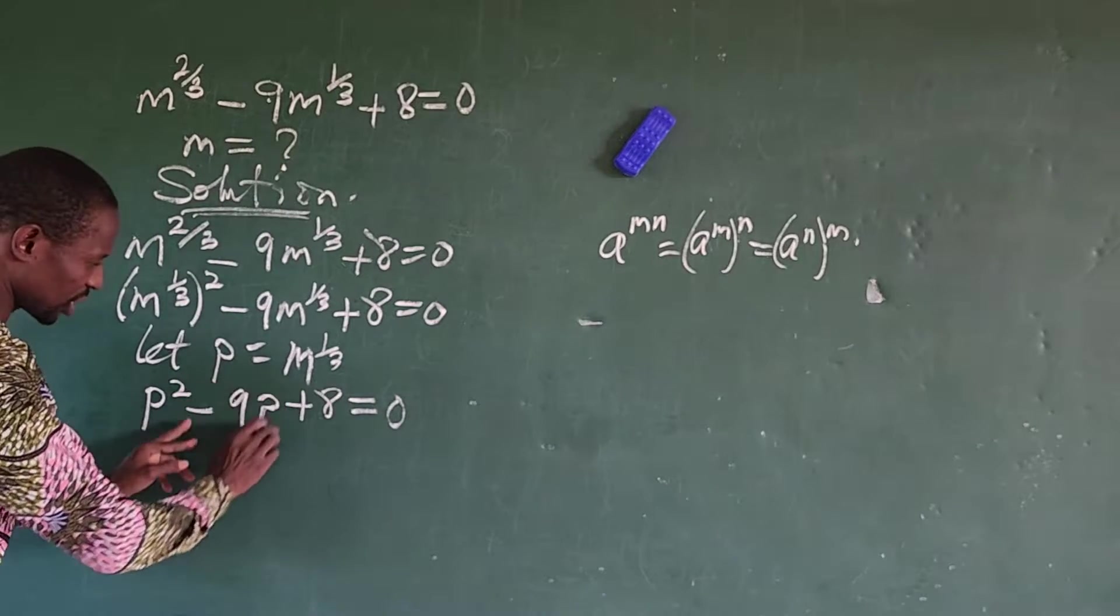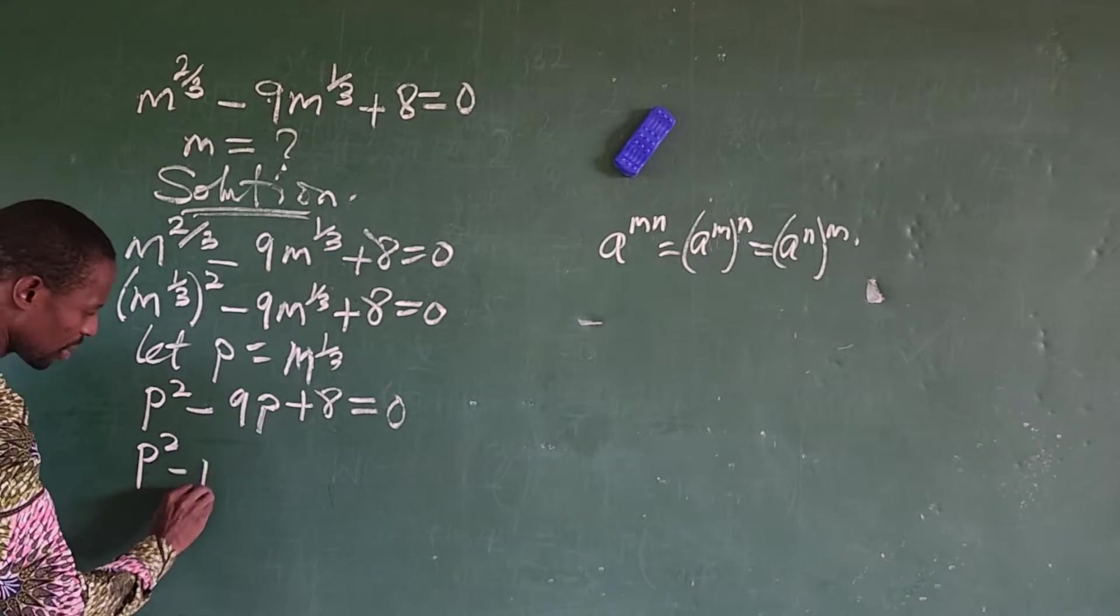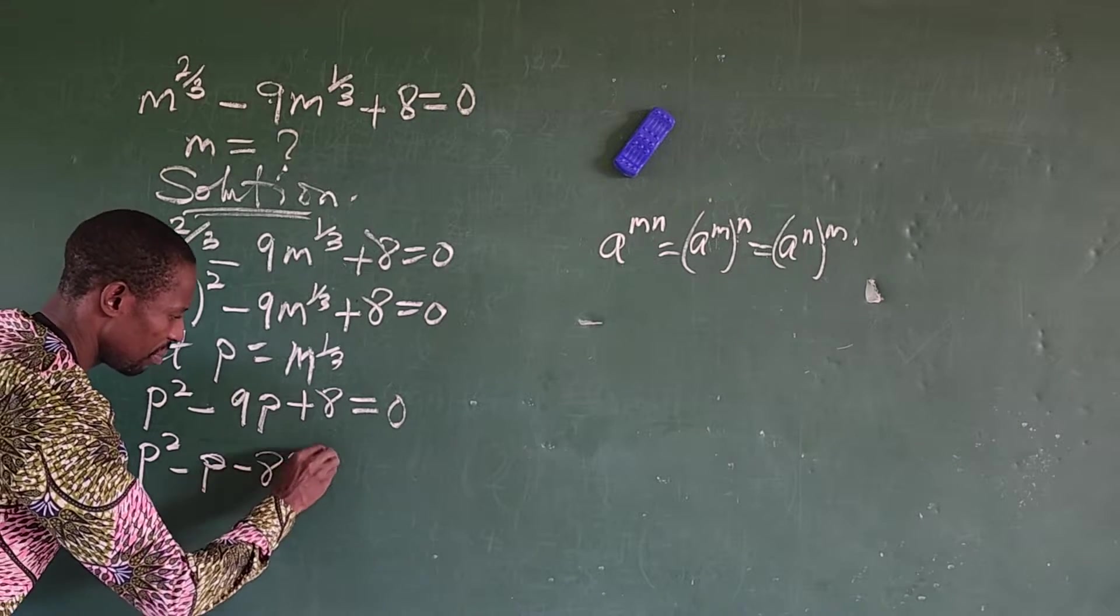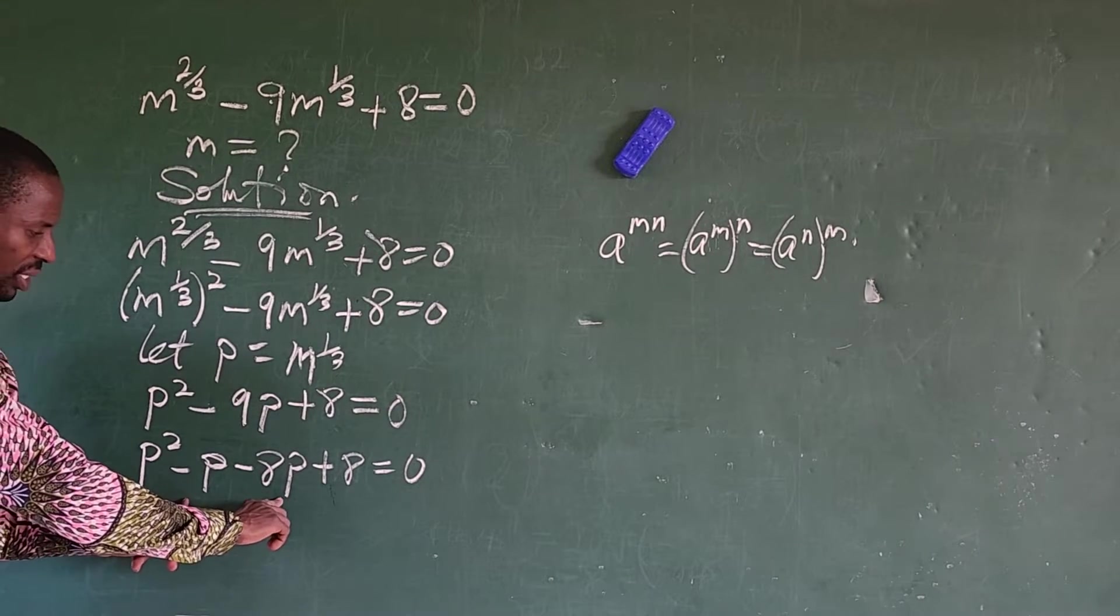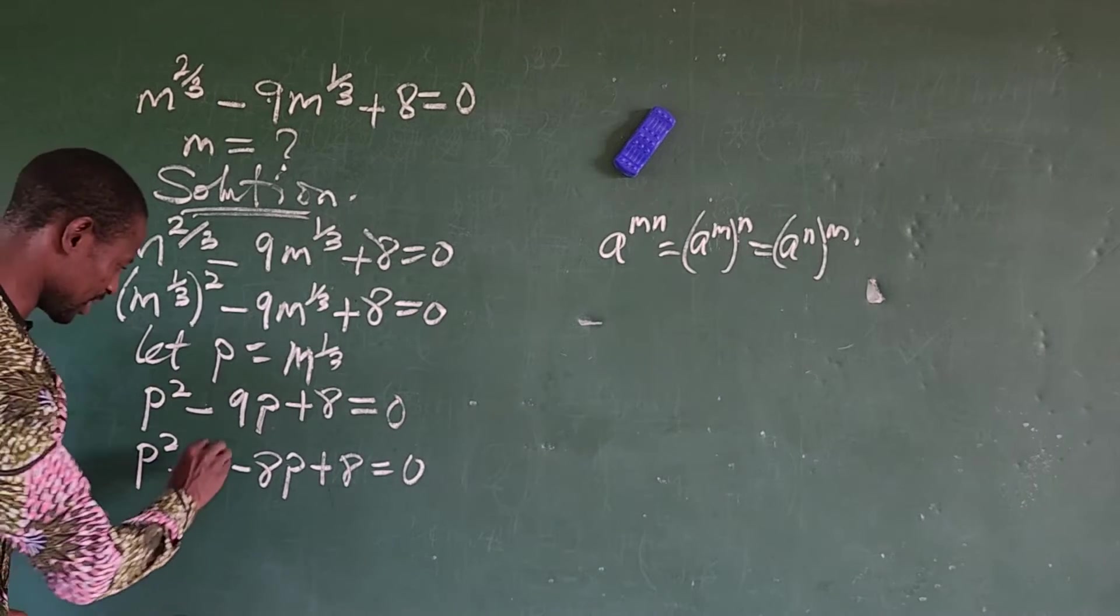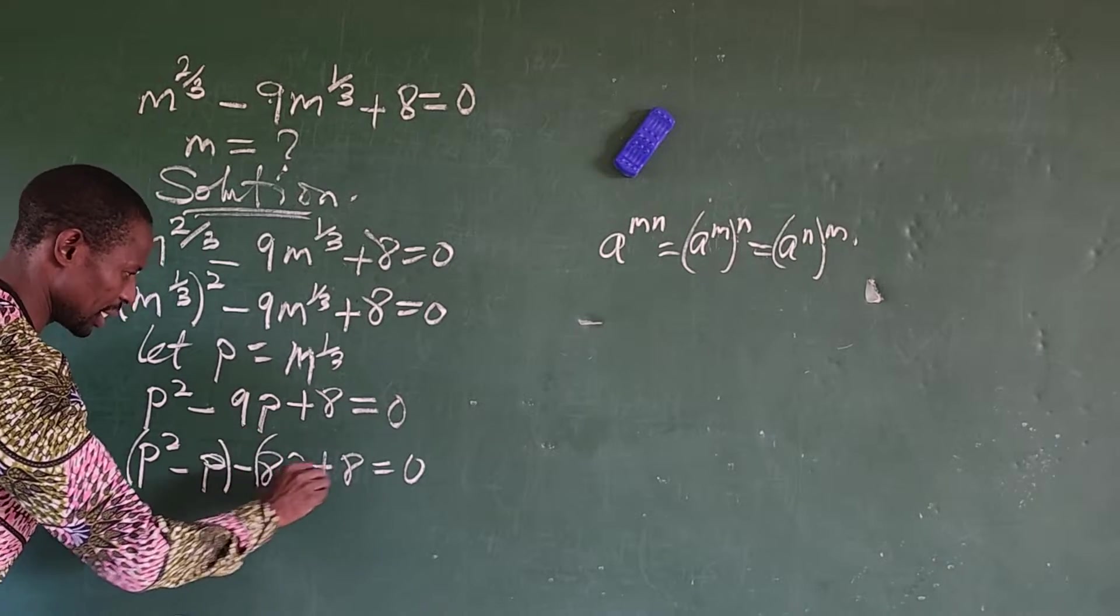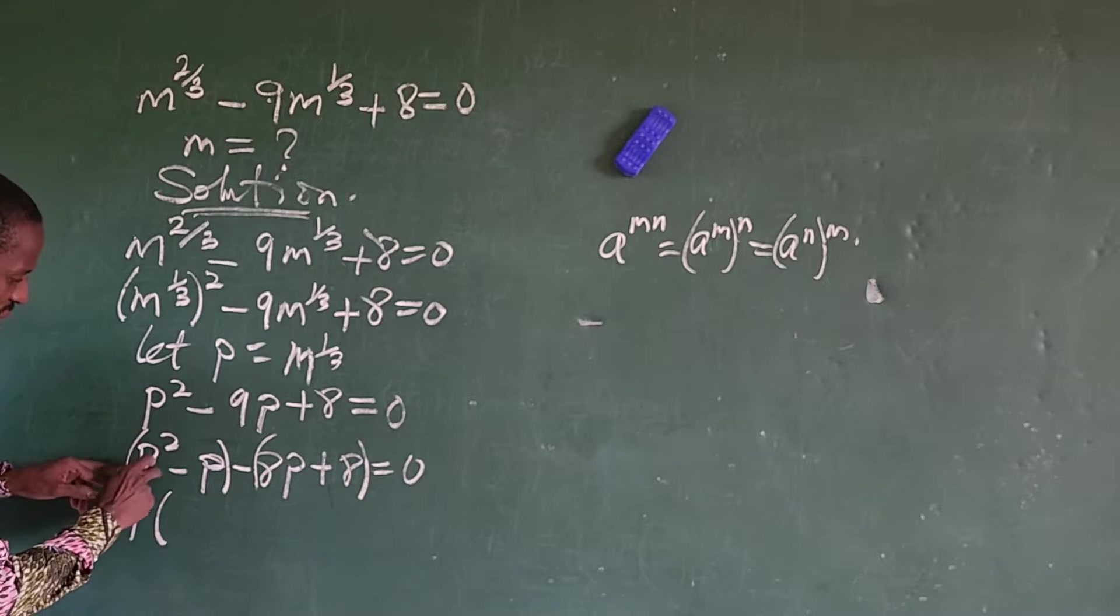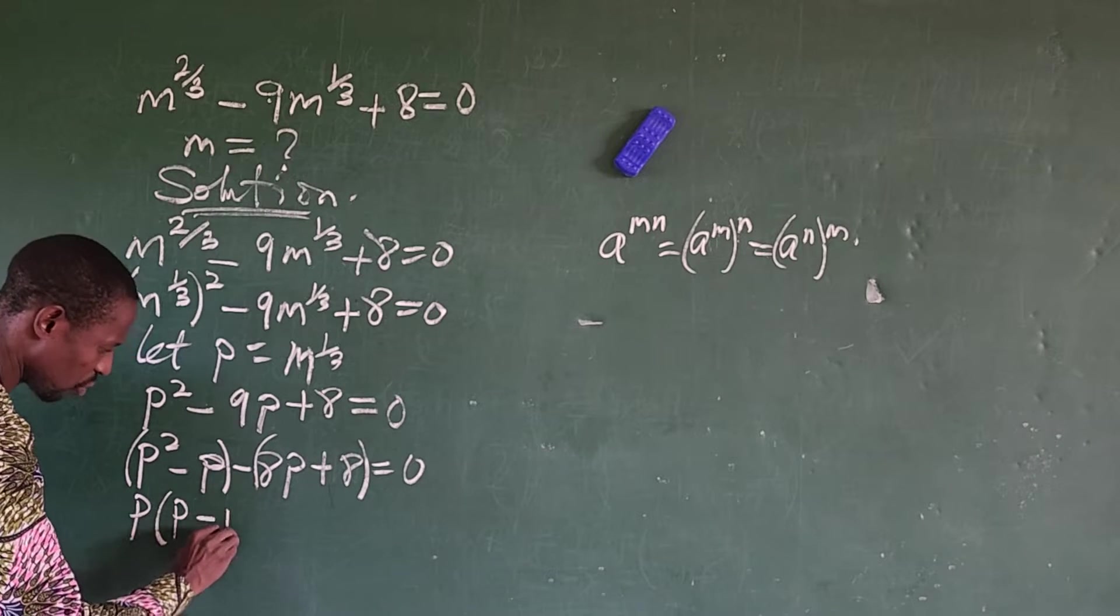Among the factors of 8, pick two of the factors that when you add them together give you minus 9 and their multiplication will give you plus 8. And if you do that, that will give you minus 8 minus 1. So we can rewrite this quantity as p squared minus p minus 8p plus 8 equals 0.